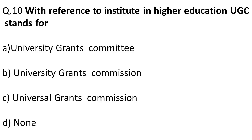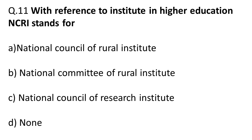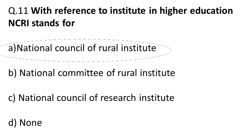Question ten: With reference to the higher education system — UGC stands for University Grants Commission. Question eleven: NCRI stands for National Council of Rural Institute. Be careful not to confuse it with 'research' — it is 'rural,' and its headquarters is in Hyderabad. The correct option is A: National Council of Rural Institute.